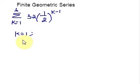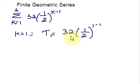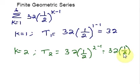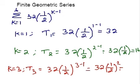When k equals 1, the exponent becomes 1 minus 1 which is 0. Any number raised to 0 equals 1 — that is one of the laws of indices. So the term becomes 1 times 32 which equals 32. When k equals 2, you get 1/2, so 1/2 times 32 equals 16. When k equals 3, you get (1/2) squared which is 1/4, and 32 divided by 4 equals 8. Now we can generate the series: 32 + 16 + 8.